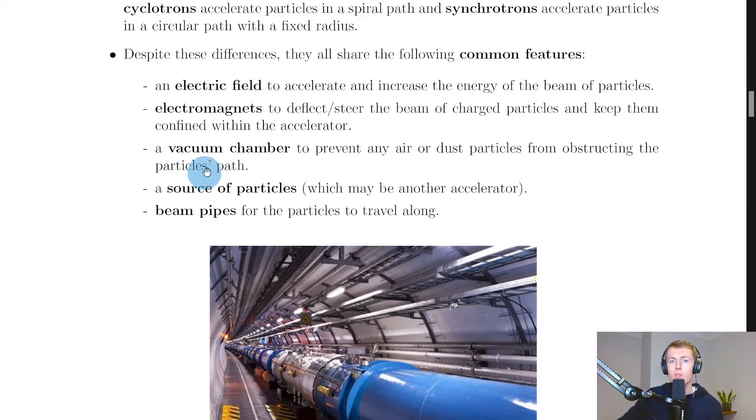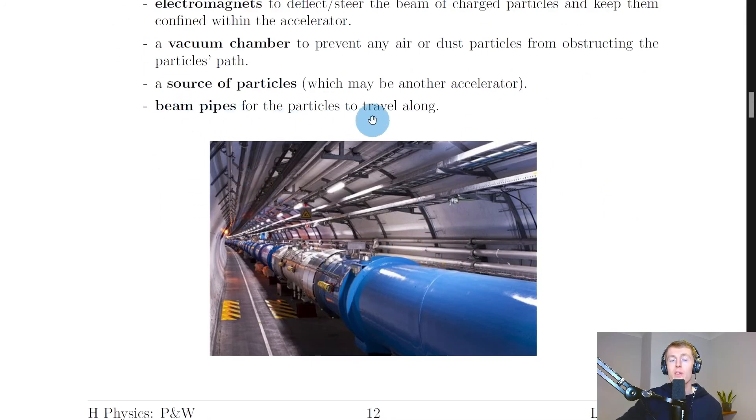They also have a vacuum chamber to prevent any air or dust particles from obstructing the particles' path. They also need a source of particles, which may be another accelerator, and lastly beam pipes, which are shown here, for the particles to actually travel along. So these are the beam pipes which are stored underground over large distances, and it's within these pipes that the particles are traveling.